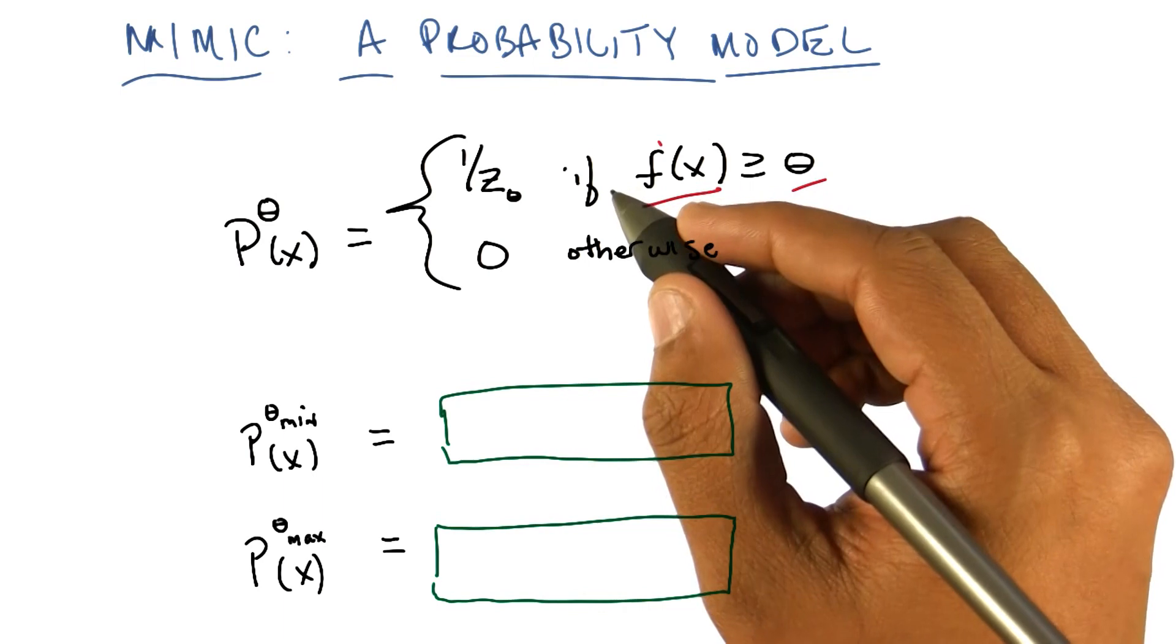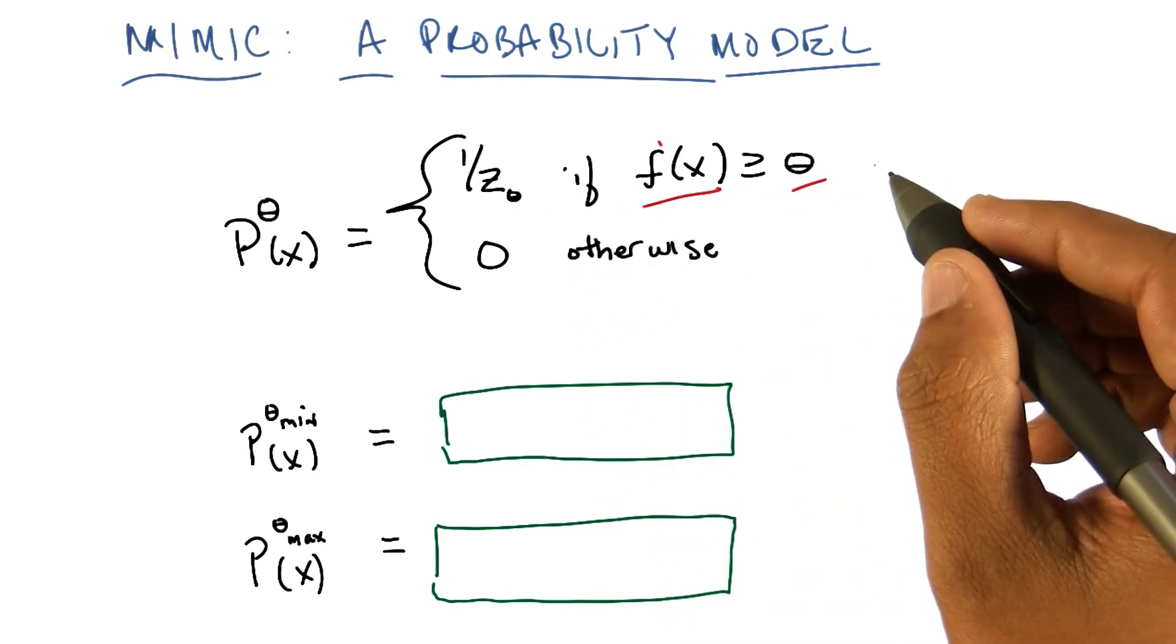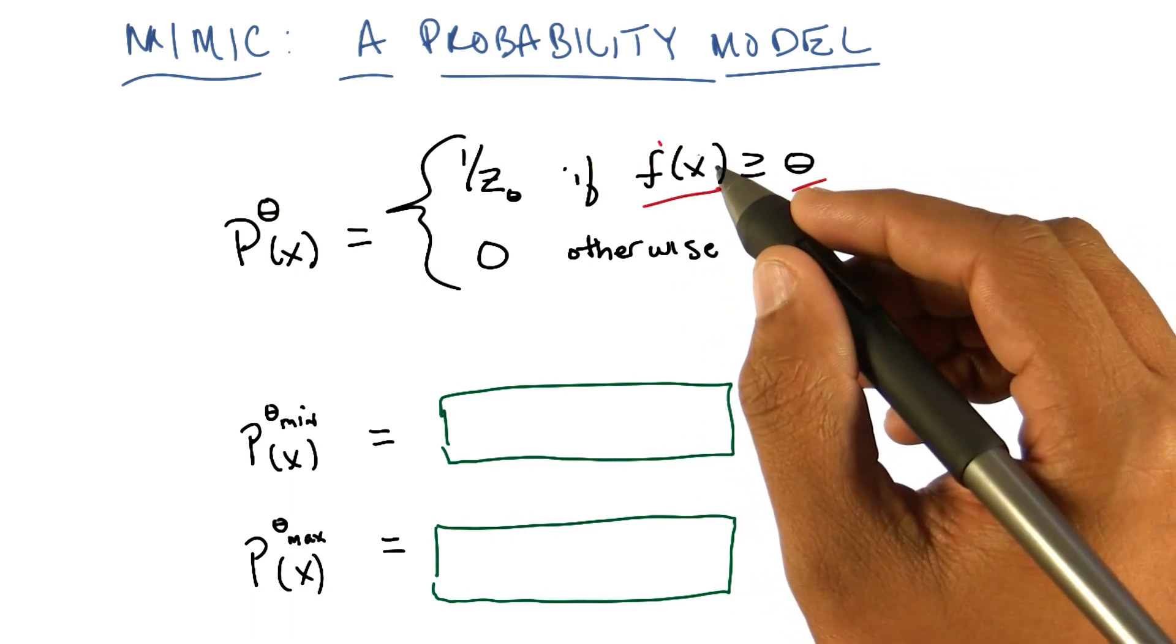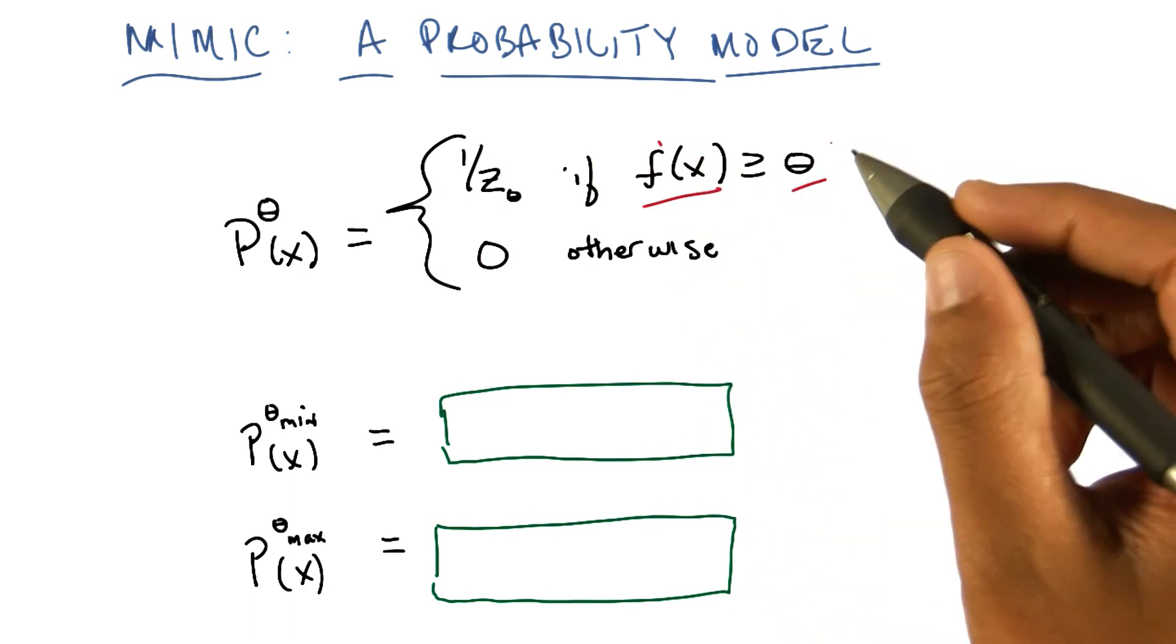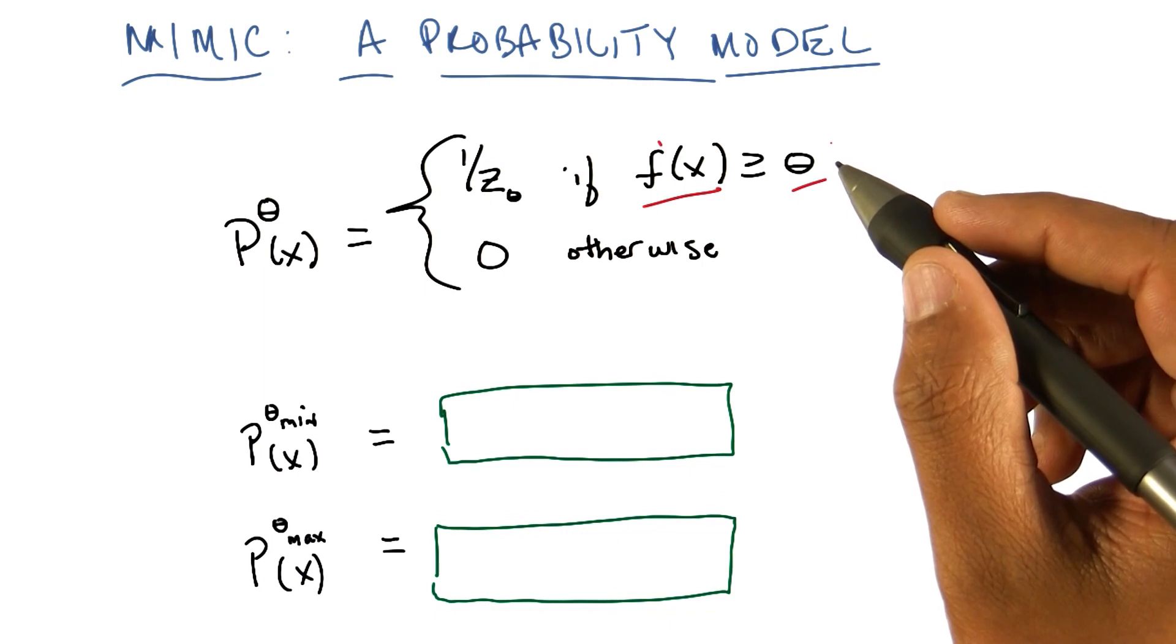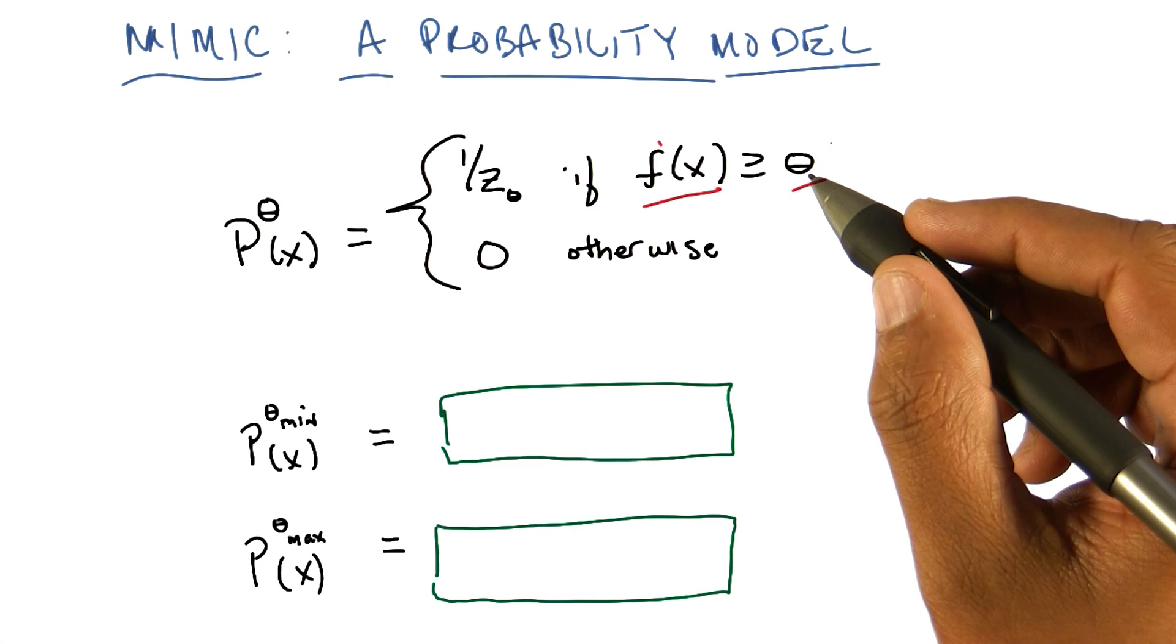So another way of saying this is that this probability is uniform over all values of x whose fitness are above some threshold. Yeah, so the image I have in my head is kind of like a mountain range, and if you put a slice through it,